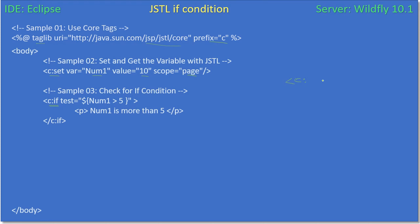With C:if, the test attribute is set equal to a value. If you place true, then whatever body you place inside will get executed, and you end the tag with C:if. The body will get executed when the test expression evaluates to true. The attribute name must be 'test' — if you use something else, it won't work.